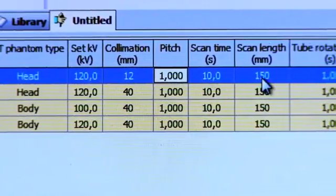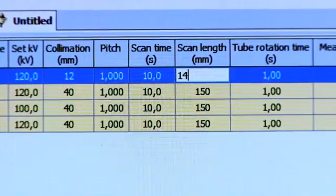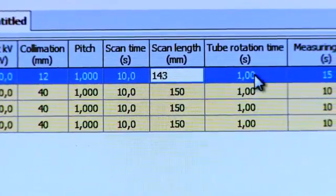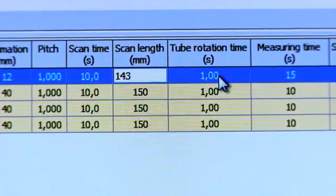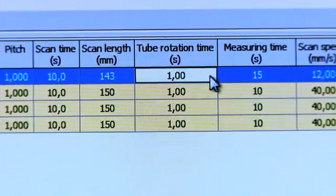Pitch. Scan length. This parameter must be added to get the dose length product. For helical scans, two collimation links must be added to the length you see in the scout.